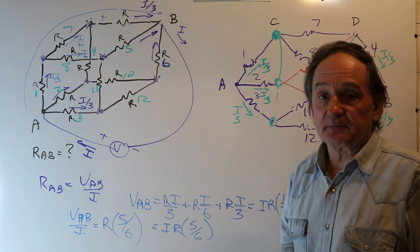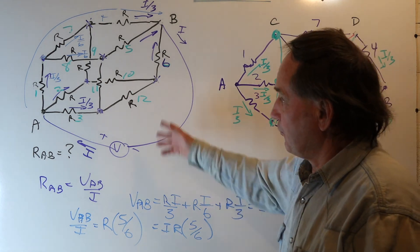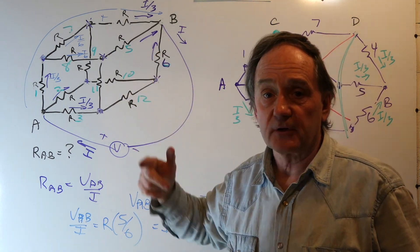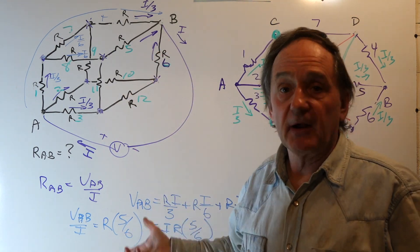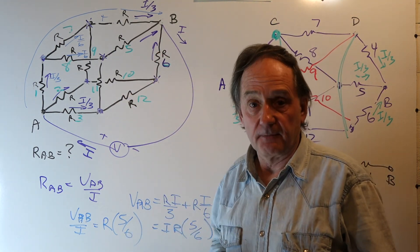So that sums it up. A quick and easy way to solve these networks is just by invoking symmetry and making use of that fact.